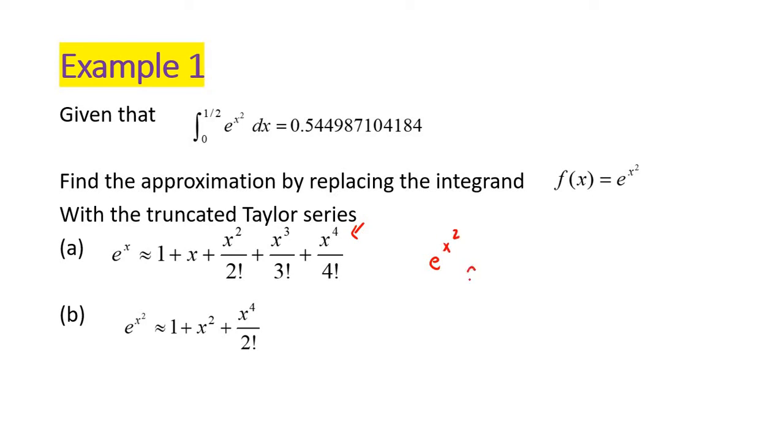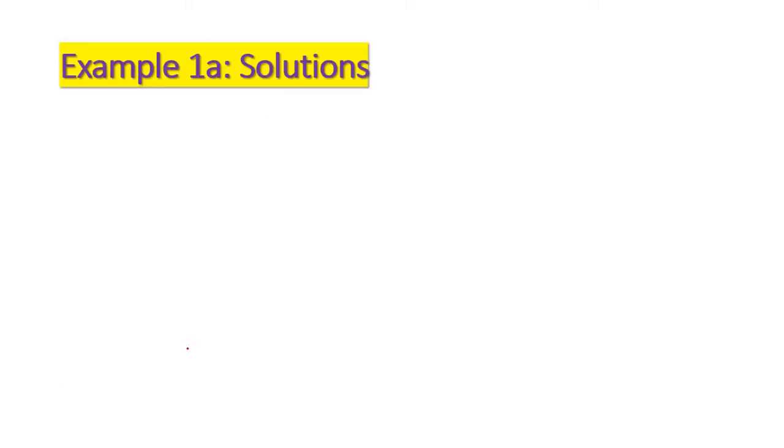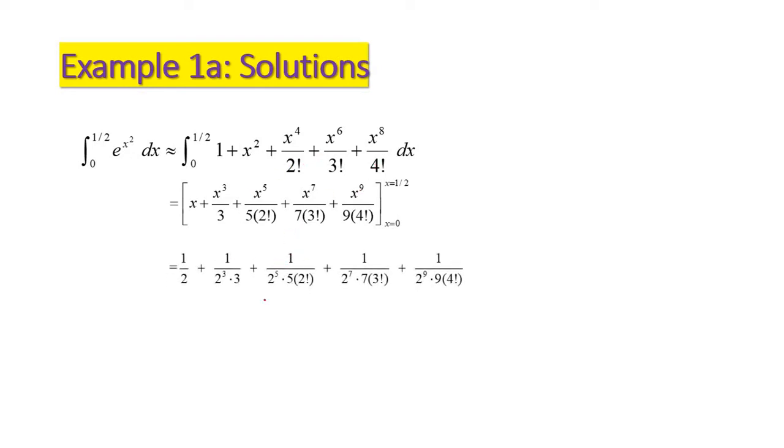So exponent x squared replaced by, x replace become x squared, so x squared squared again, x power 4 divided 2 factorial. So x squared power 3, so become x power 6 over 3 factorial plus x power 8 over 4 factorial. Equation A using 5 term, equation B using 3 term of the Taylor series. So exponent x squared replaced by 5 term of the Taylor series, and integrate term by term, plug in the upper limit, deduct the low limit which is 0.